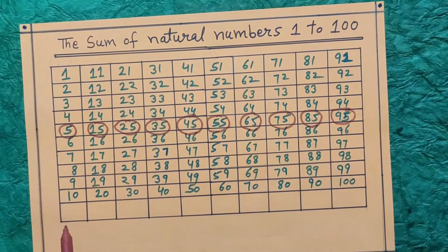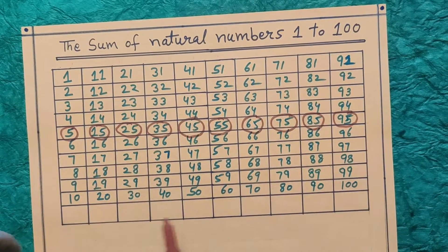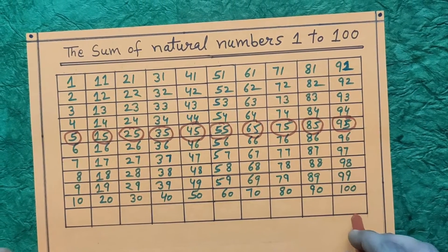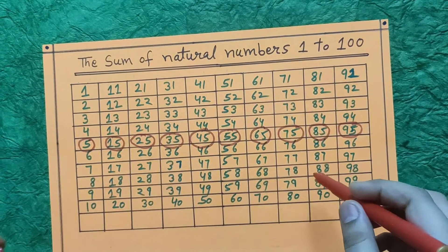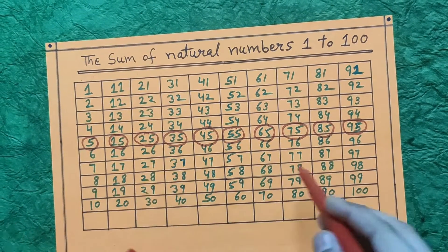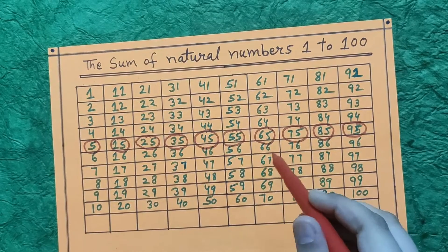So we will write these numbers in these empty boxes. And after that, after these all the numbers, we will write 5.